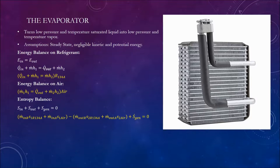Energy balance on air: the rate of internal energy in equals the rate of heat out plus the rate of internal energy out. Entropy balance: entropy in plus entropy out plus entropy generated equals zero. The rate of entropy in of the refrigerant and air minus the rate of entropy out of the refrigerant and air plus the rate of entropy generated equals zero.